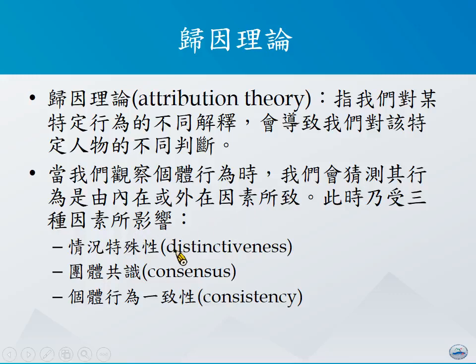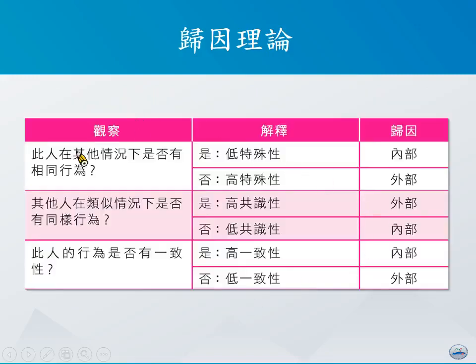这些因素通常来讲有三种可能的重要构面。第一个是情境的特殊性（Distinctiveness），第二个是团体的共识（Consensus），第三个是个体行为的一致性（Consistency）。当我们观察到一个人时，首先在某情境之下，观察他在其他情境下是否有一样的作为。如果在所有情境都有一样的行为，代表这个行为跟环境无关，纯粹是因为他自己喜欢想做这样的事情；如果他在不同环境下会做出不大一样的事，则这些造成行为的成因是来自于外部的部分。